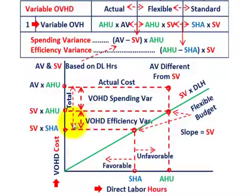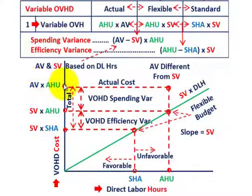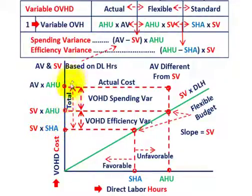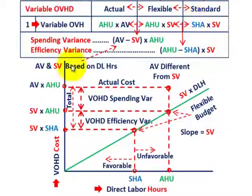Let's look at our total variance. That's the difference between our actual variable rate times the actual hours used, and our standard variable rate times the standard hours allowed based on our standard. Going back to our table, that's the actual amount versus the standard amount.